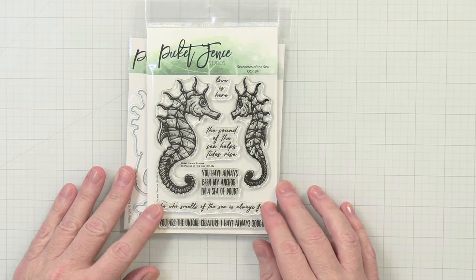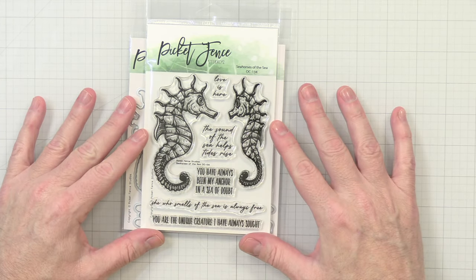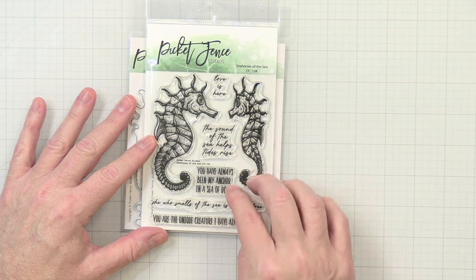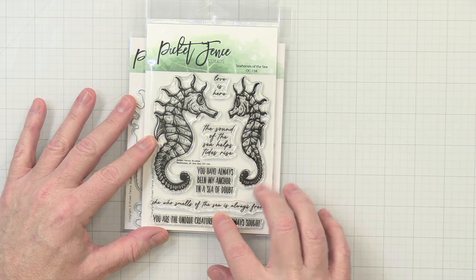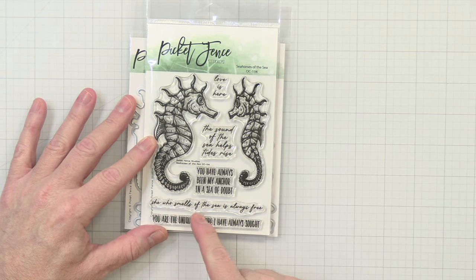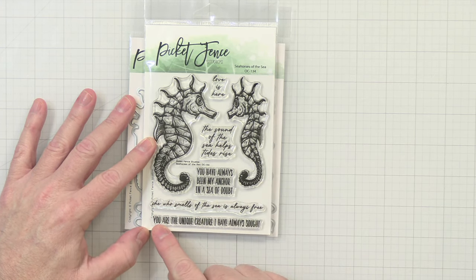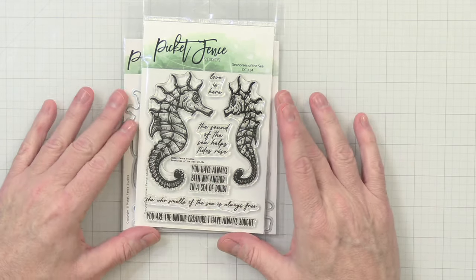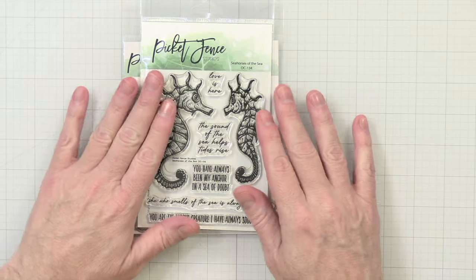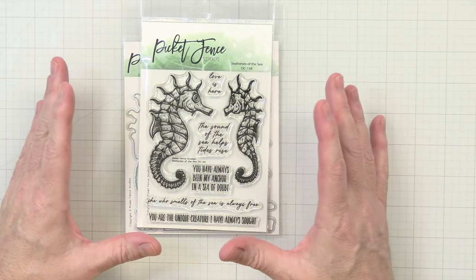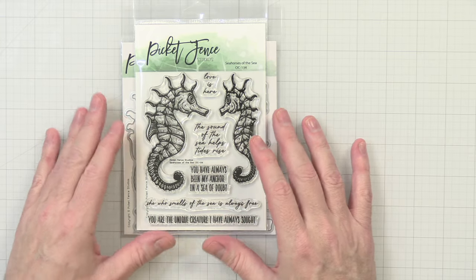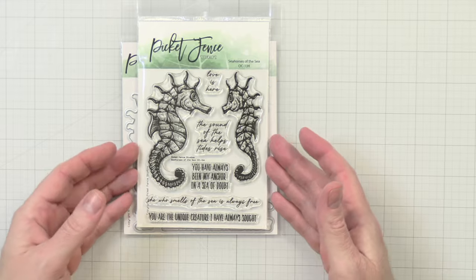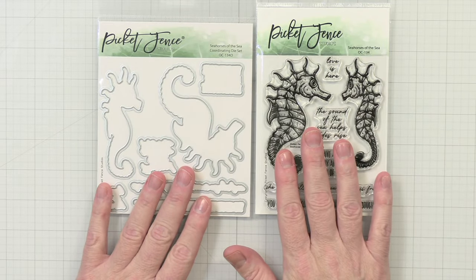Look at these little adorable seahorses. So cute. It's called Seahorses of the Sea. They do have some sentiments: love is here, the sound of the sea helps tides rise, you have always been my anchor in a sea of doubt, she who smells of the sea is always free, and you are the unique creature I have always sought. Really cute seahorses here. I love that there's a bigger one and a smaller one. I love that they're facing different directions so that you can either have them on their own or make them as a couple or friends.